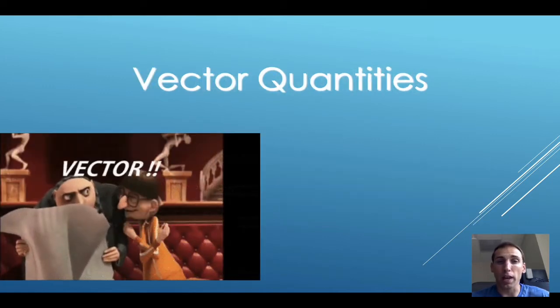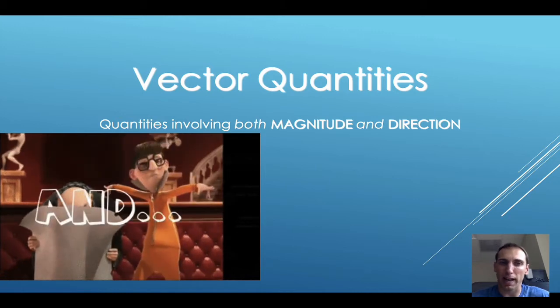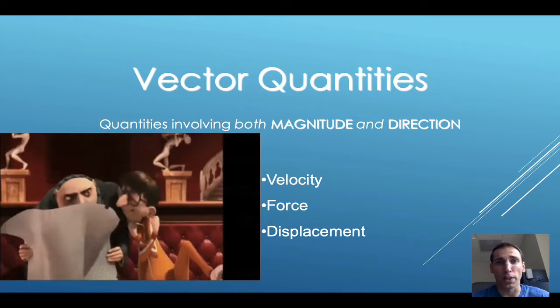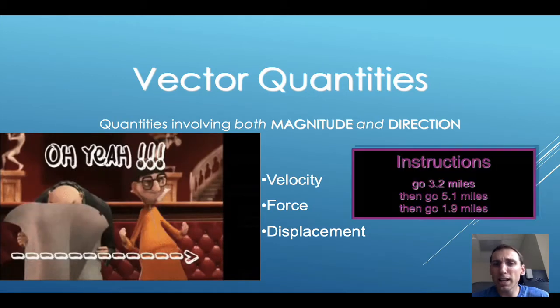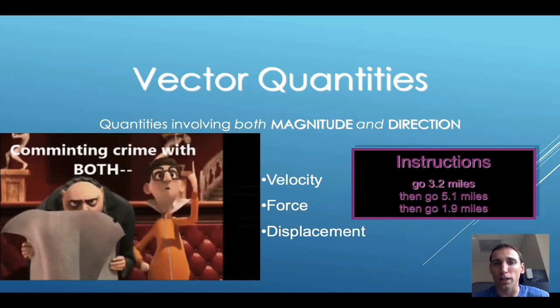Vector quantities, on the other hand, require both a magnitude and direction to make sense. Vector quantities we'll be using a bunch in this class include velocity, force, and displacement. Many times, vector quantities don't make sense without directions included.